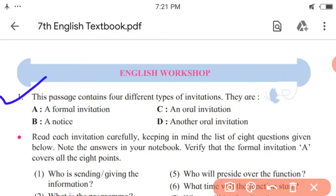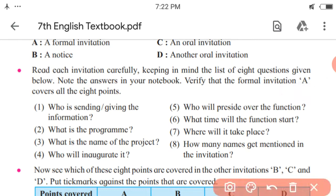This passage contains four different types of invitations. They are formal invitation, a notice, an oral invitation and another oral invitation. I hope you all might have understood it. Let us see what is related to it. Read each invitation carefully, keeping in mind the list of eight questions given below. Note the answers in your notebook. Verify that the formal invitation A covers all the eight points.